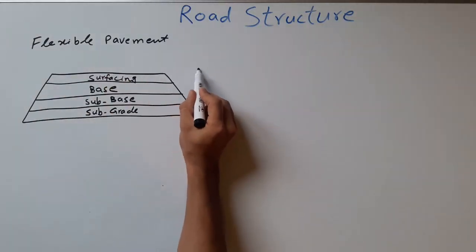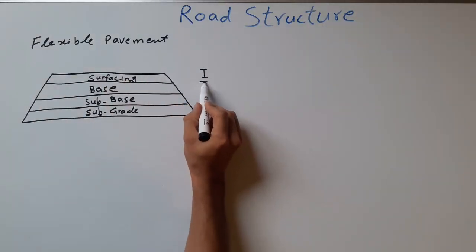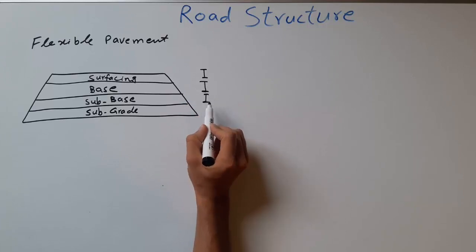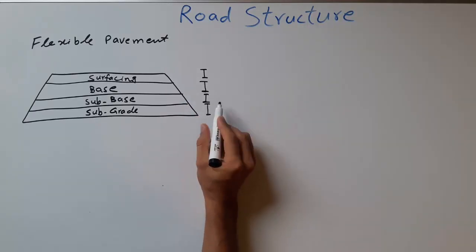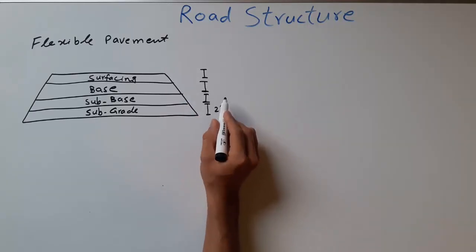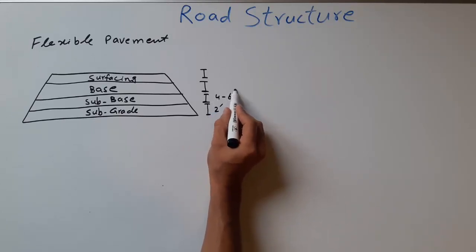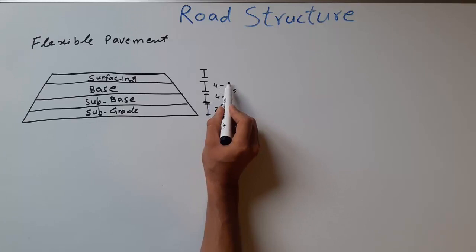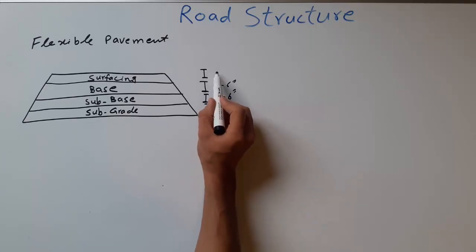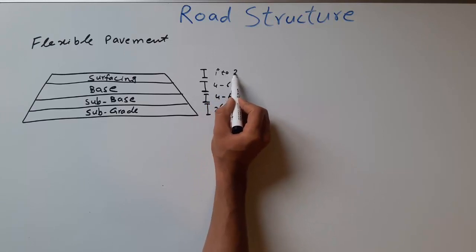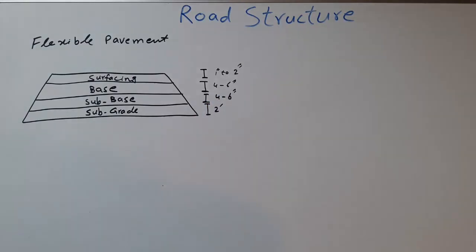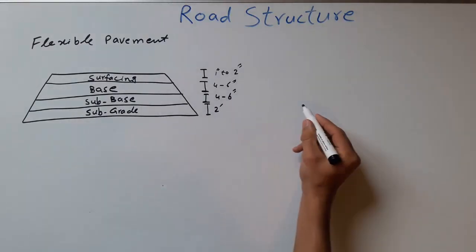To summarize the dimensions on the diagram: subgrade is two feet, sub base is four to six inches, base is also four to six inches, and surfacing is one to two inches. This is our flexible pavement.